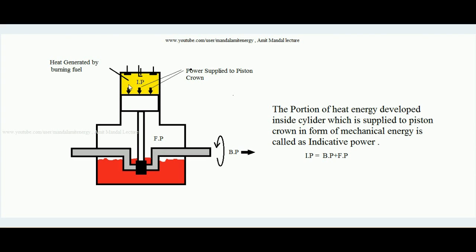In the working stroke, the charge is sucked, compressed, and a spark is introduced, developing high pressure inside the cylinder. The energy is first in the form of heat energy when the charge is ignited. That heat energy converts into mechanical energy just over the immediate top of the piston. The energy available over the piston top is called indicative power.